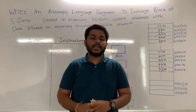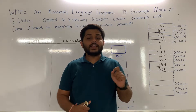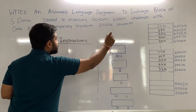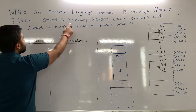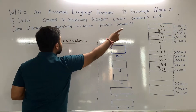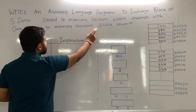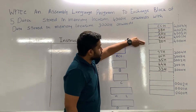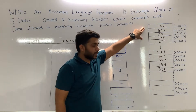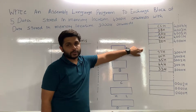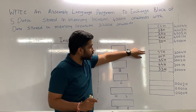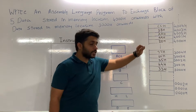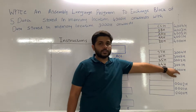Hi everyone, I am Jay and today we are going to see an 8085 assembly language program. The program is: write an 8085 assembly language program to exchange a block of 5 data stored in memory location 4000H onwards with data stored in memory location 3000H onwards. From 4000H onwards 5 data are stored and from 3000H onwards 5 data are stored, and we have to write a program to exchange these 5 data.